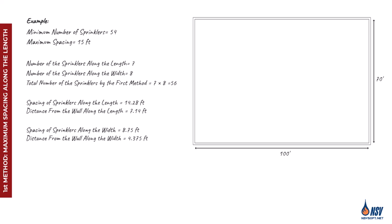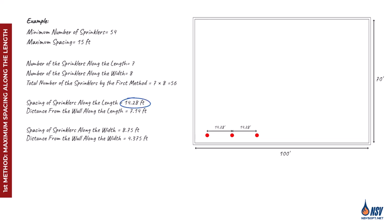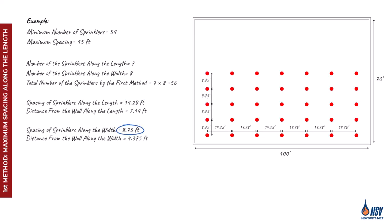Now we have all the necessary data to locate the sprinklers, including how many are required across the length and width of the room as well as their spacing. To locate the first sprinkler, we begin at one corner of the room and draw parallel lines along the length and width, each set at a distance equal to half the calculated spacing. The point where these two lines intersect marks the position of the first sprinkler. From there, we copy this sprinkler using the calculated spacing along both directions, placing all required sprinklers uniformly across the space.